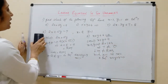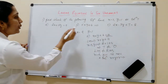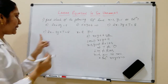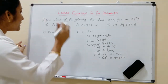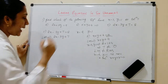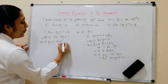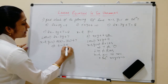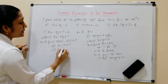Now we move to the third problem: 2X minus 3Y plus 7 is equal to 8. Again, we check whether X equal to 2 and Y equal to 1 is a solution or not. LHS is 2X minus 3Y plus 7. Substituting, we get 2 into 2 minus 3 into 1 plus 7, which gives 4 minus 3 plus 7. That is 1 plus 7, equal to 8.